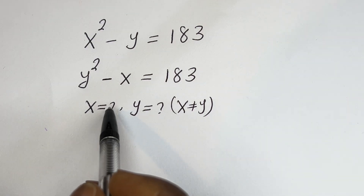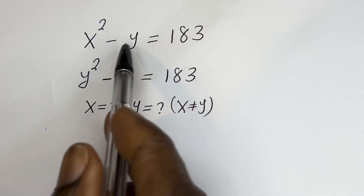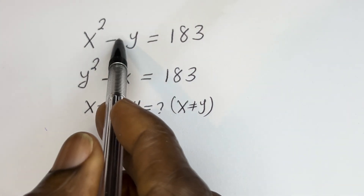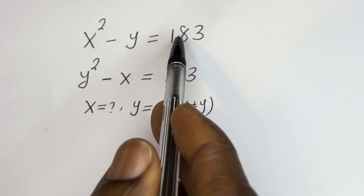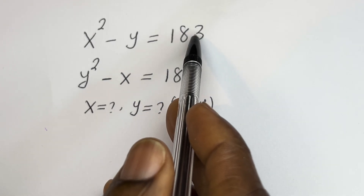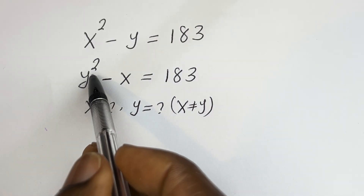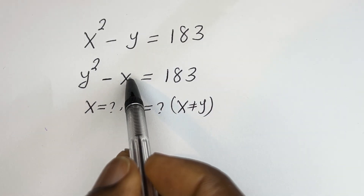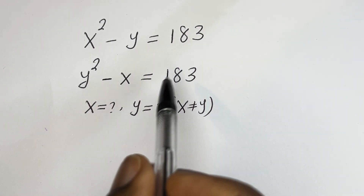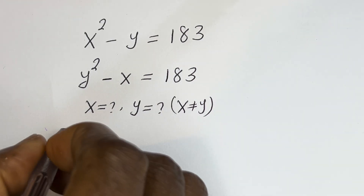Hello. How to solve for s and y in this equation: s squared minus y is equal to 183, and y squared minus s is equal to 183. Solution.